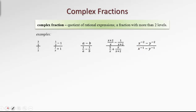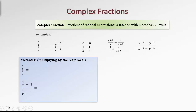How do we simplify complex fractions? There are two methods. The first method is replacing the main division with multiplication by the reciprocal of the fraction in the denominator. But in order to use this method, we need to have a single fraction in the numerator and a single fraction in the denominator. In the first case, we already have single fractions, so let's apply this method.